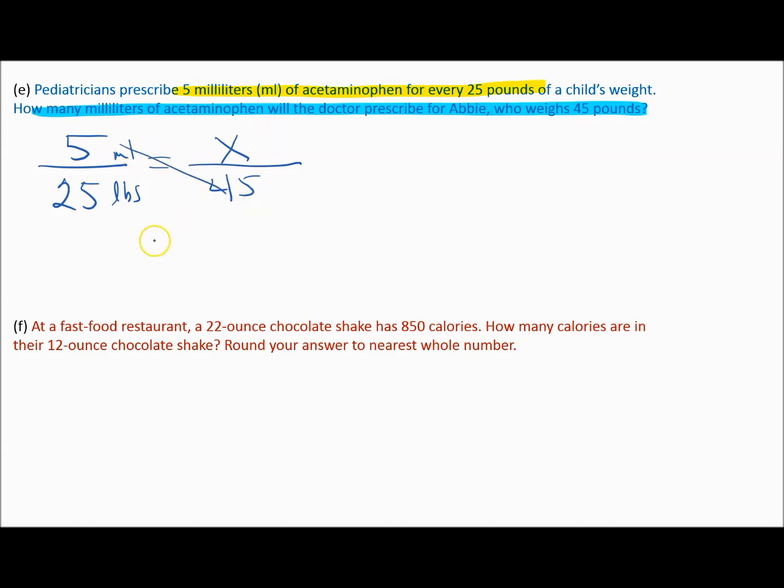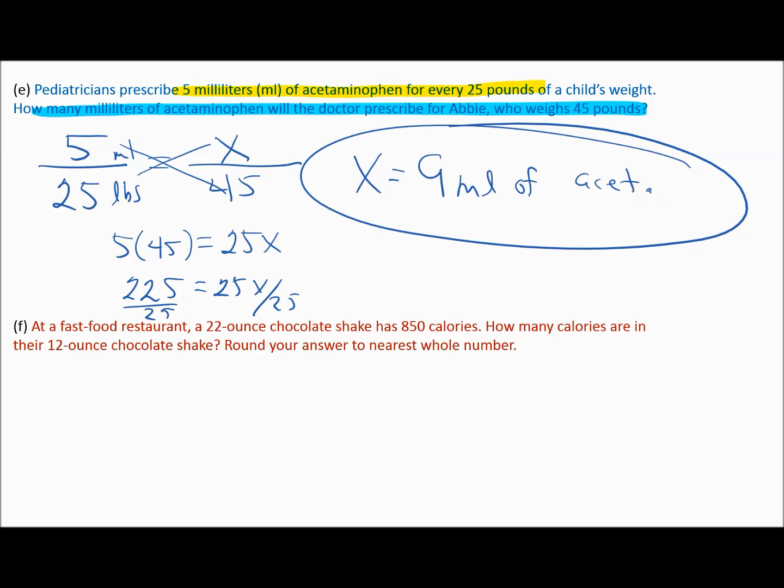Again, milliliters over pounds, milliliters over pounds. Now it's time to cross multiply. 5 times 45, 25 equals 25 times x. In our calculators, we can calculate 5 times 45, and I get 225 equals 25x. Next step, divide both sides by 25 to get the x isolated. And 225 divided by 25 gives me 9. 9 milliliters of acetaminophen.